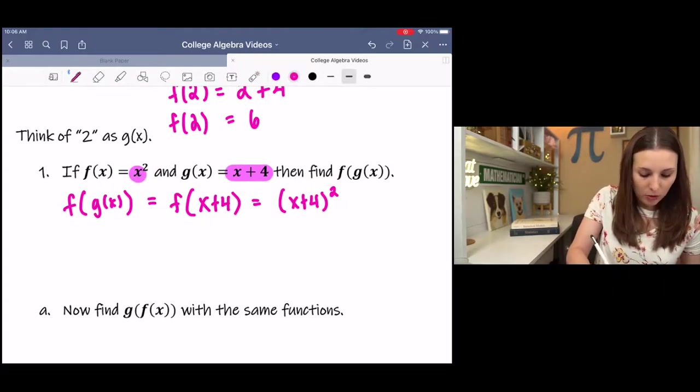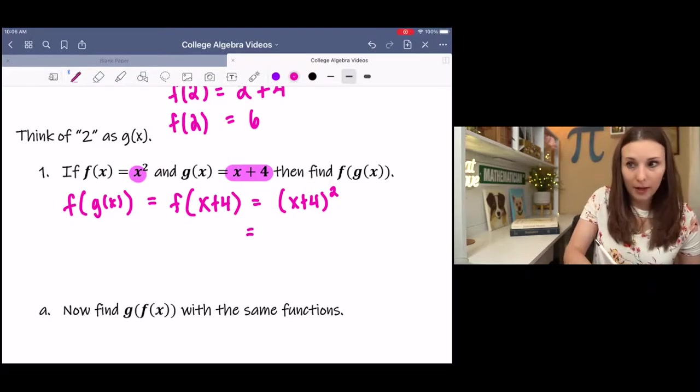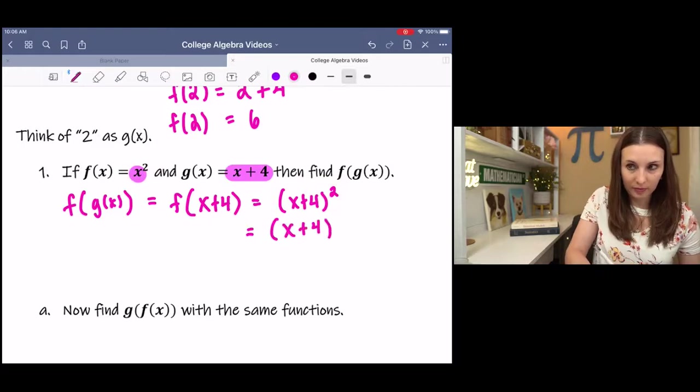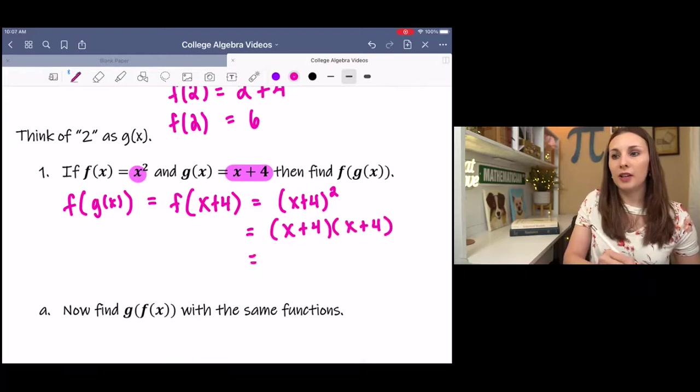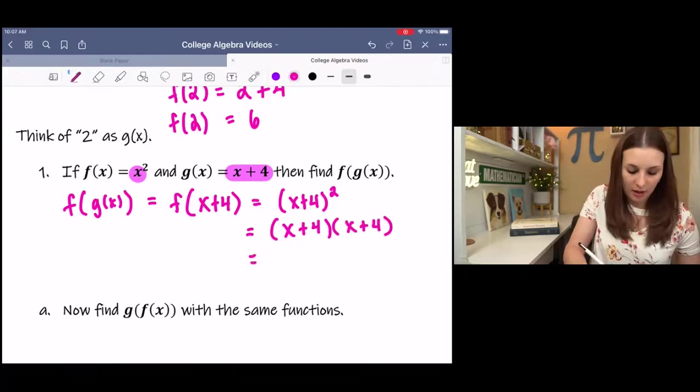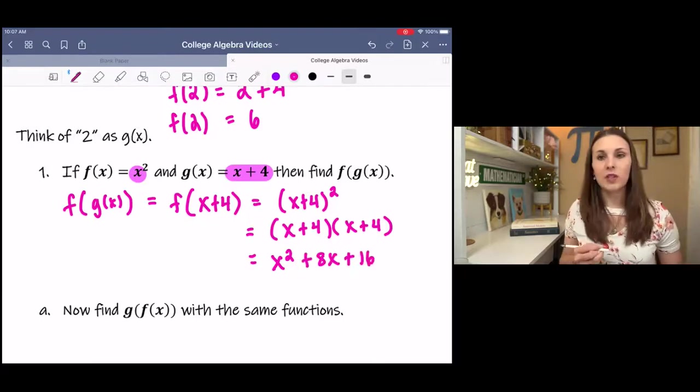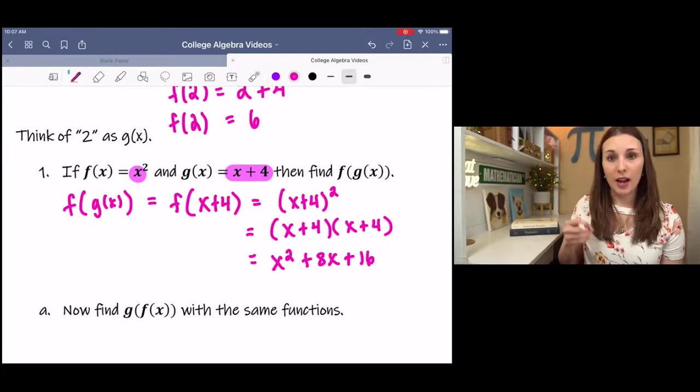Then we could simplify this. We're going to expand this out using our rules of exponents and then multiply. And you should get x times x, 4 times x, 4 times x, and 4 times 4. So f of g of x is x squared plus 8x plus 16.